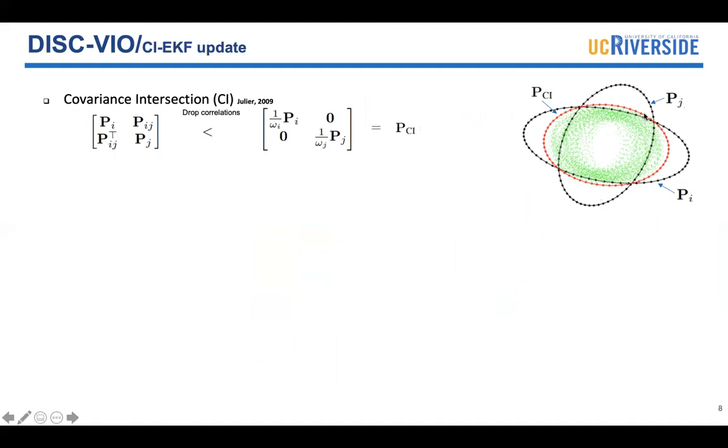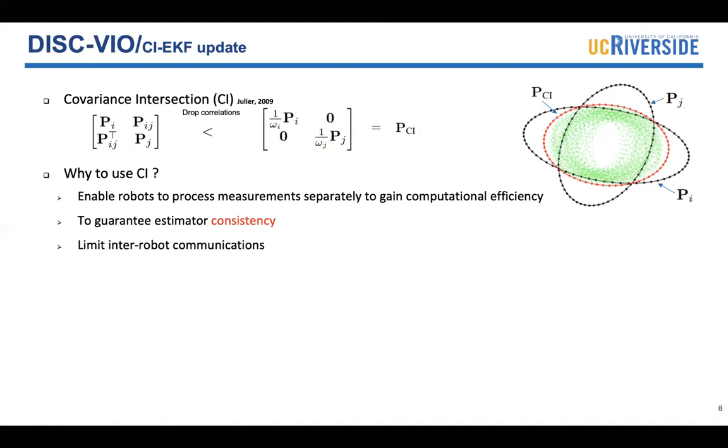In this figure, P_I and P_J are the covariance ellipses for robot I and robot J. The red one is the CI covariance ellipse, and it is guaranteed to be larger than the unknown true covariance. By using CI, we can limit the robot communications to gain computational efficiency. The important part is that we can guarantee the consistency of our estimate. Note that if your estimate is inconsistent, your filter can diverge.